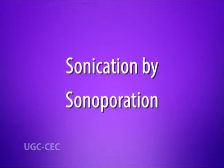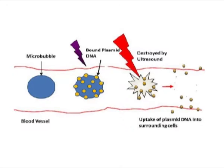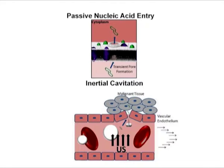Sonication by sonoporation uses high-intensity ultrasound to induce transient pore formation in the cell membranes. This pore formation is credited mainly to the cavitation of gas bubbles interacting with nearby cell membranes. It is enhanced by the addition of an ultrasound contrast agent, a source of cavitation nuclei.